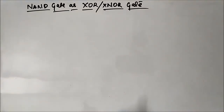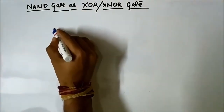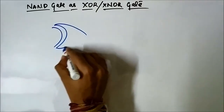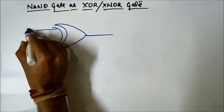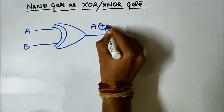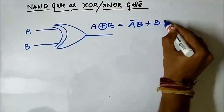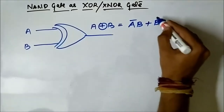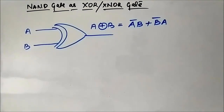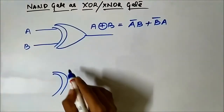Here we will discuss how we can convert the NAND gate into XOR and XNOR gate. First let us see what is the output of a XOR gate. This is the schematic symbol of an XOR gate — we give inputs A and B, and the output of the XOR gate is given by A̅B or AB̅. This is the output of the XOR gate, and the XNOR gate is the complement of the output of the XOR gate.